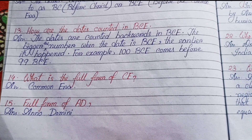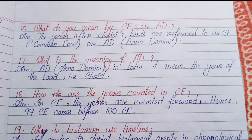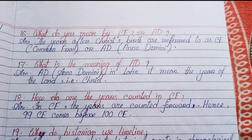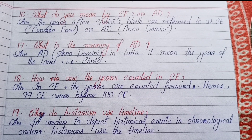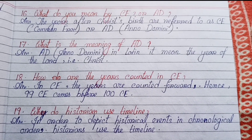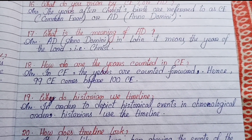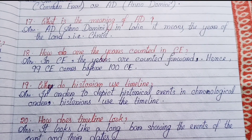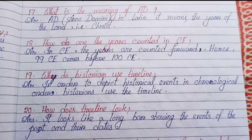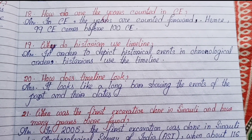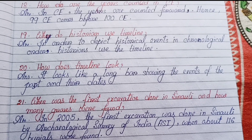Number fourteen: What is the full form of CE? Common Era. Number fifteen: Full form of AD — Anno Domini. Number sixteen: What do you mean by CE or AD? The years after Christ's birth are referred to as CE, that means Common Era, or AD, that means Anno Domini. Number seventeen: What is the meaning of AD? Anno Domini — in Latin it means 'the year of the Lord,' that is Christ. Number eighteen: How are the years counted in CE? In CE the years are counted forward; hence 99 CE comes before 100 CE.